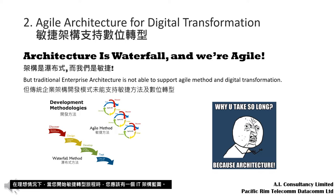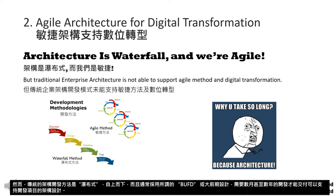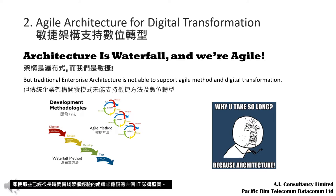Ideally, you should have an architecture blueprint in place when you kick off your Agile transformation journey. However, traditional architecture development methods are waterfall and top-down, under the so-called BUFD or big upfront design approach, which takes months or years to develop before they can deliver applicable design for development projects. Even for organizations which already have architectural practices in place for a long time, most of their legacy designs are not able to evolve fast enough for Agile development.